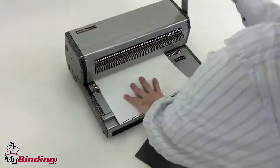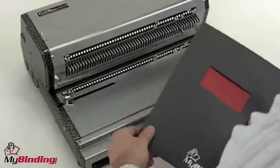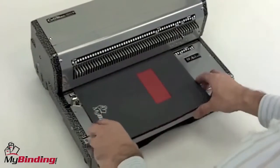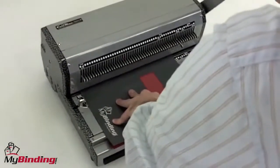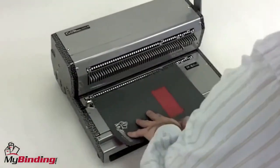It's wise to use scrap paper for your first punch to make sure things are all perfect. Then begin punching with the covers, the bind side in, pull the lever all the way down, and your punch is made.